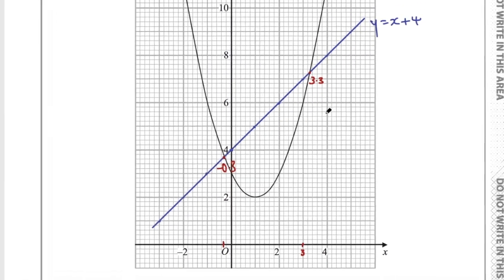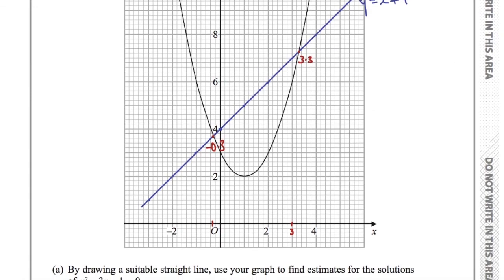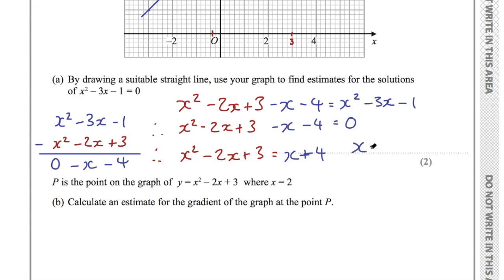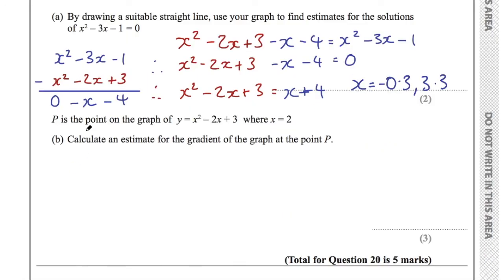So my solutions are x equals minus 0.3 and 3.3. The second part of the question says P is the point on the graph of y equals x squared minus 2x plus 3 where x equals 2. Part b says calculate an estimate for the gradient of the graph at point P.